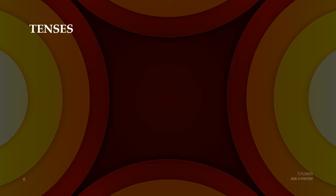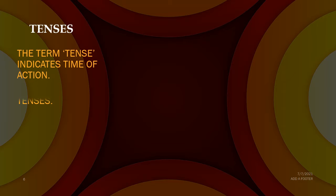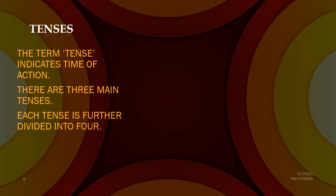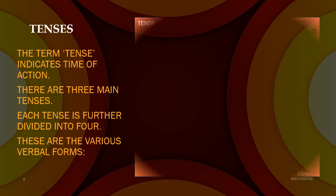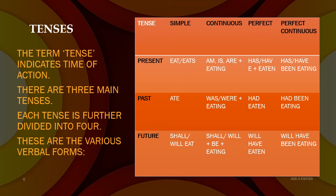Recalling the tenses: the term tense indicates time of action. There are three main tenses and these tenses are further divided into four. Let us see the verb 'eat' which gets changed according to the time of action. In simple present the verb will be 'eat' or 'eats'. In present continuous, the verb changes to 'I am eating', 'is eating', or 'are eating'. In present perfect, it becomes 'has eaten' or 'have eaten'. For past perfect, the verb will be 'had eaten', and for present perfect continuous, it will be 'has been eating' or 'have been eating'.